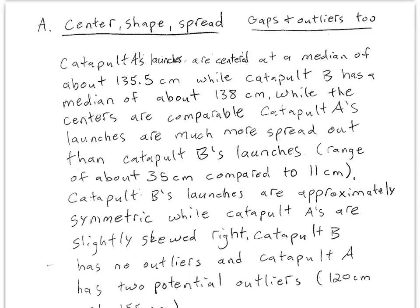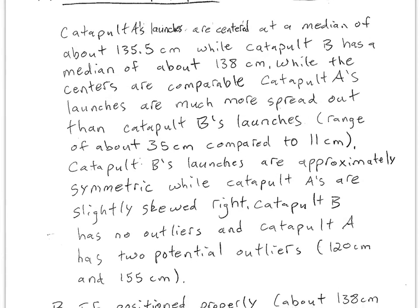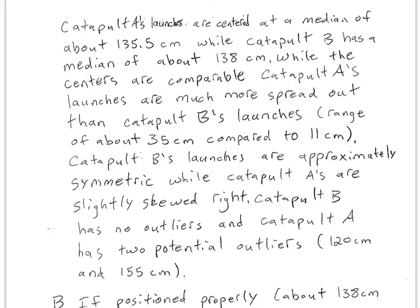So here, Part A, center, shape, spread, gaps, outliers too. So I said catapult A's launches are centered at a median of about 135.5 centimeters, while catapult B has a median of about 138 centimeters. I picked the median for center because that's the easiest to estimate. I wasn't going to make a list in my calculator or try to do anything that crazy. I'm just going to estimate the center by looking at those two distributions. So again, notice I'm comparing the centers, and everything's in the context of the problem.